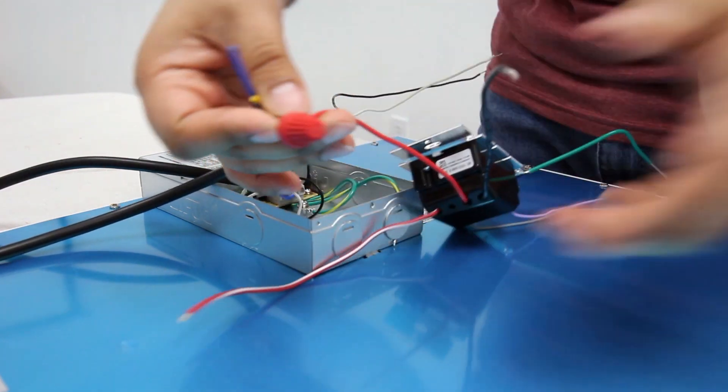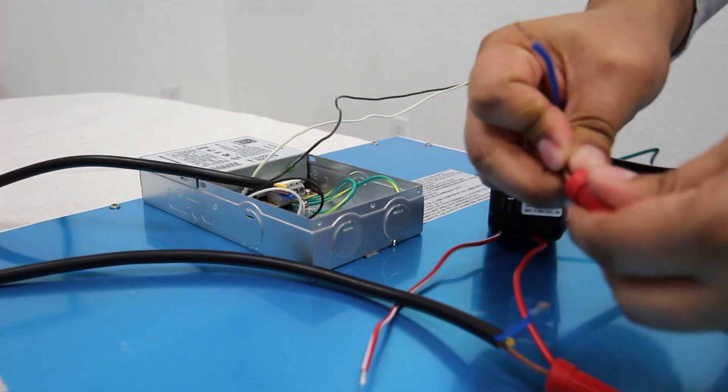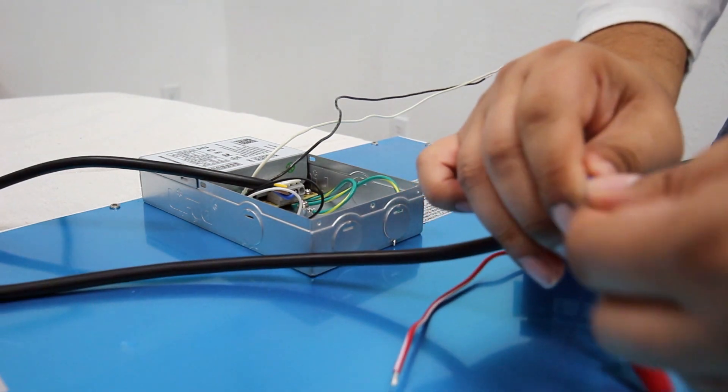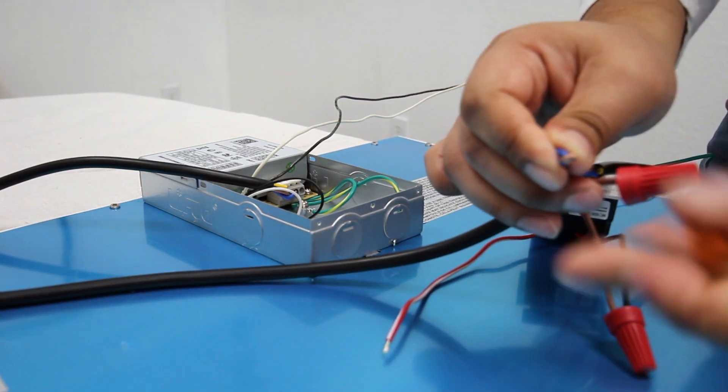Connect the dimmer's red wire to the fixture's live wire and the dimmer's black wire to the main power line. Tap the fixture's neutral wire together with the main power line's neutral wire.